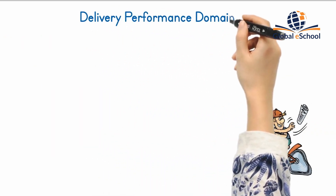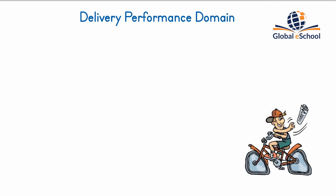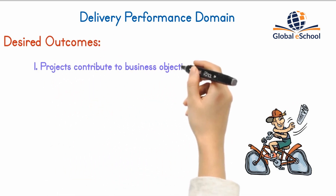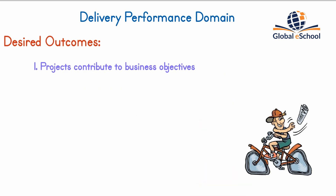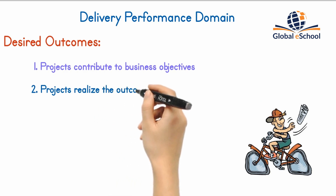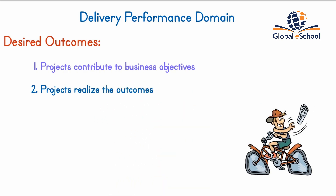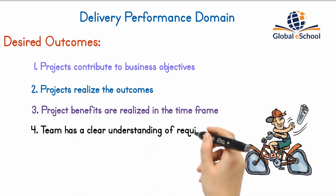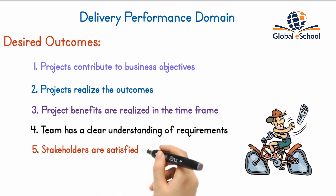The delivery performance domain addresses activities and functions associated with delivering the scope and quality that the project was undertaken to achieve. Effective execution results in: projects contributing to business objectives and advancing strategy, projects realizing the outcomes they were initiated to deliver, project benefits realized in the timeframe planned, the project team having a clear understanding of requirements, and stakeholders accepting and being satisfied with project deliverables.